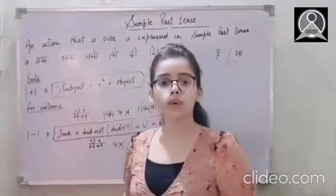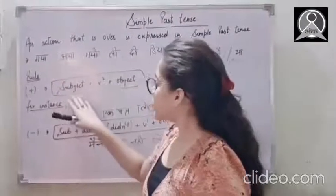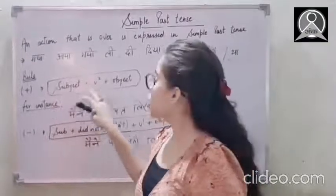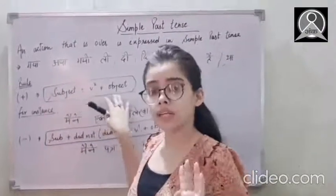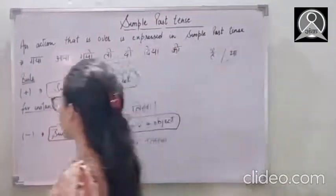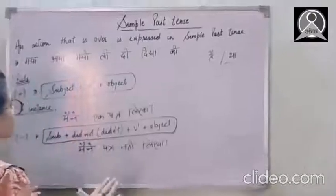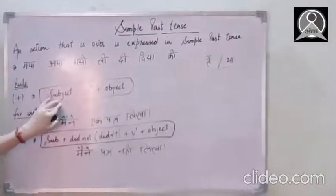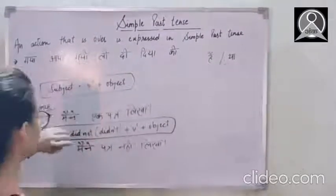So let's know about the first rule for affirmative sentences here. Subject always has to be there at the very first, then verb's second form and then the object. So let's have an example here.